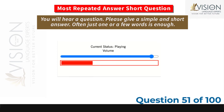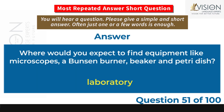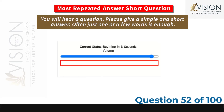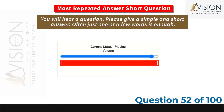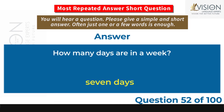Where would you expect to find equipment like microscopes, a Bunsen burner, beaker and petri dish? Laboratory. How many days are in a week? Seven days.